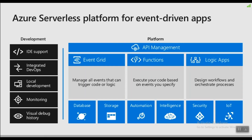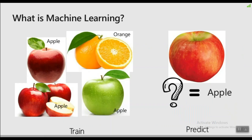Let's switch gears and look at machine learning. It's a buzzword thrown around very often, so it's important to understand what we really mean. At its core, machine learning is the process of examining vast amounts of data to recognize patterns, and then using that knowledge to recognize the same patterns in brand new data the system has never seen before. For example, if I give my system a bunch of images and tell it this is an apple, an orange, or a banana, it learns to recognize those fruits and can identify a brand new image of an apple.